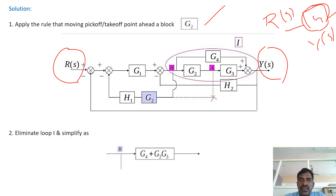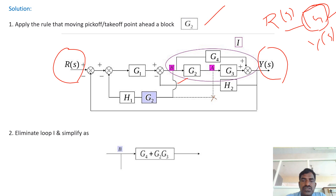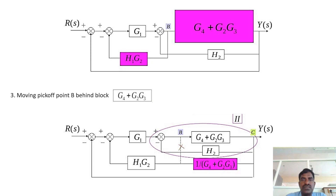Based on the techniques, we reduce the blocks to a single block. First, we need to move the branch point — point A — before the block G2, that is from position A to position B. Now G2 and G3 are in series, so we multiply them to get G2·G3. That result is in parallel with G4, giving G4 plus G2·G3. After moving the branch point from A to B and combining cascaded and parallel blocks, we proceed to the next step.